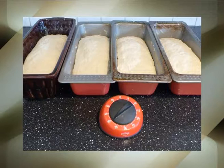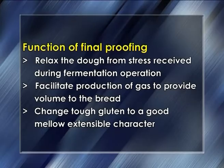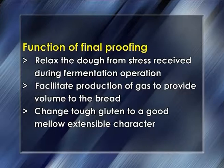Final proofing is done at a temperature of 30 to 35 degrees Celsius at 85 percent relative humidity for 55 to 65 minutes. The functions of final proofing are to relax the dough from the stress received during fermentation, to facilitate production of gas to provide volume to the bread, and to change tough gluten to a good mellow extensible character.